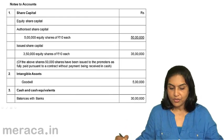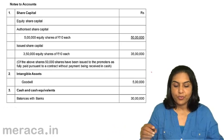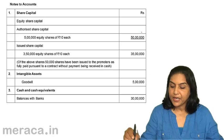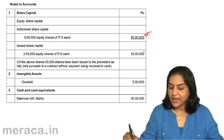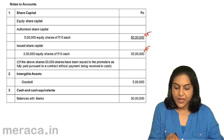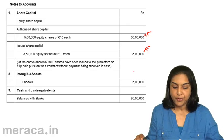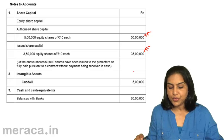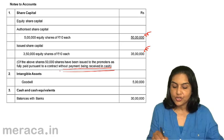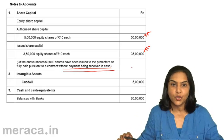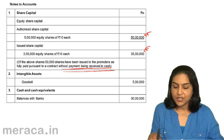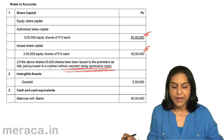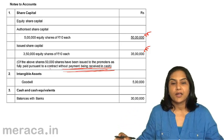How is it shown in the notes to accounts? Note 1 — share capital: equity share capital, authorized capital (the registered capital) of 50 lakhs. Issued share capital is 3 lakhs plus 50,000 shares of 10 each — 35 lakhs. Of the above shares, 50,000 shares have been issued to the promoters as fully paid pursuant to a contract without payment being received in cash. This needs to be disclosed as a separate note. Whenever shares are issued for consideration other than cash, such disclosure is required and must be mentioned in the notes to accounts.